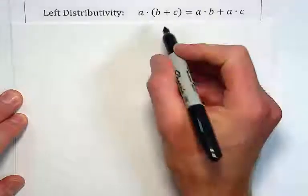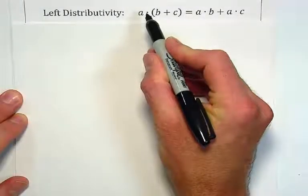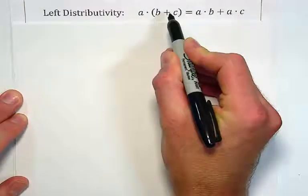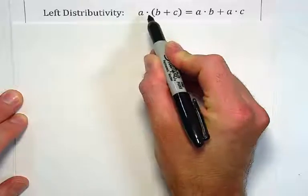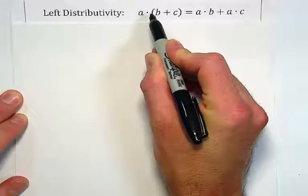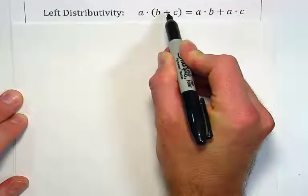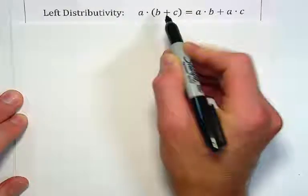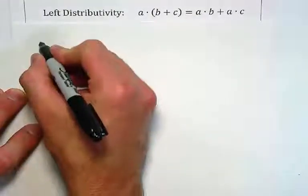We begin with the idea of distributivity of multiplication over addition, and in this case we're going to call this left distributivity because the multiplication is on the left-hand side of the addition. Let's take a look at an example.